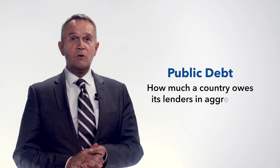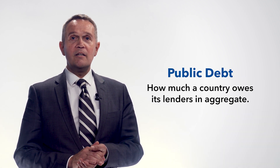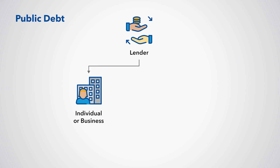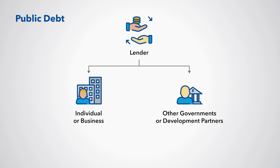What is public debt and why should you care about it? Public debt is how much a country owes its lenders in aggregate. A lender could be an individual or a business — for example, a bank or a financial institution. A lender can also include other governments or development partners, and they can be domestic or foreign.